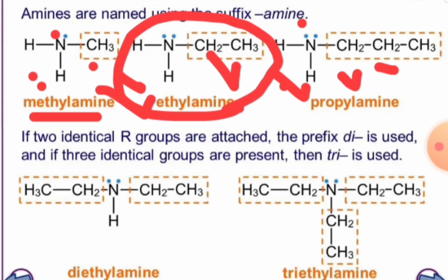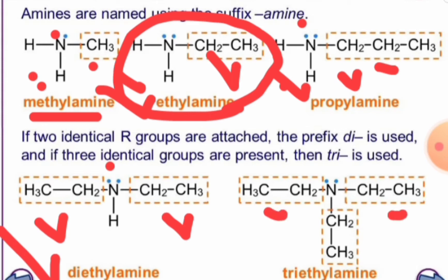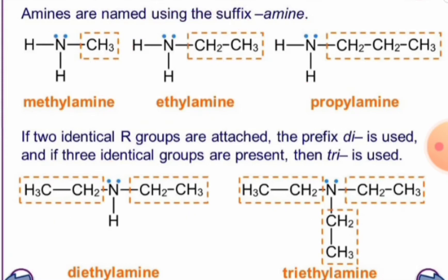If two identical R groups are attached to the nitrogen, we use the prefix di. You can see here there are two ethyl groups present on the nitrogen, so the name is diethylamine. And if three identical R groups are present, we use the prefix tri. With three ethyl groups on the nitrogen, it is called triethylamine.